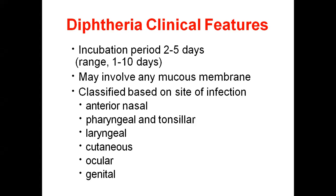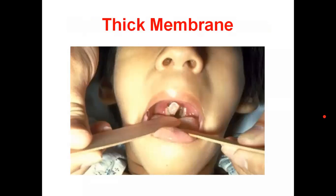Once it enters, it first involves mucus membranes. Classification is based on site of infection: it may begin at the anterior nasal area, then extend to the pharyngeal and tonsillar areas, then enter the laryngeal layer, then cutaneous, then ocular, and via circulation may reach the genital region. So the sites of infection can be pharynx, tonsil, larynx, cutaneous, ocular, or genital regions.